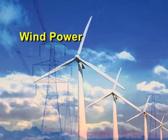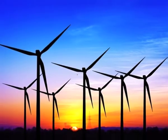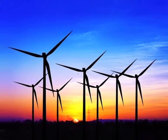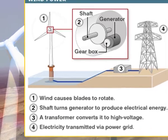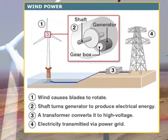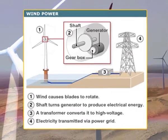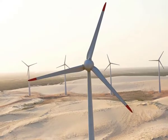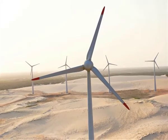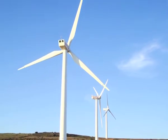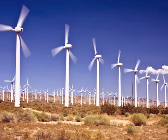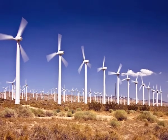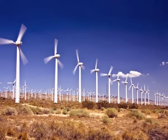Wind power is the energy produced directly from windmills. As the wind flows in, it rotates the mill and generates electricity. This resource is free and renewable, and it also emits no harmful greenhouse gases, which are these days depleting and affecting our environment very negatively.